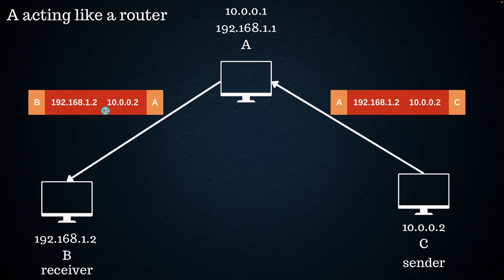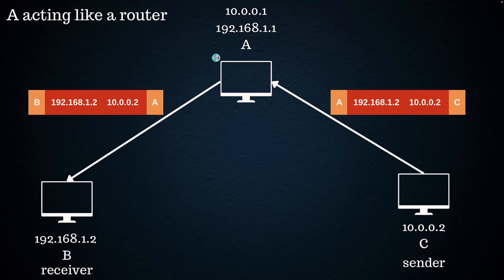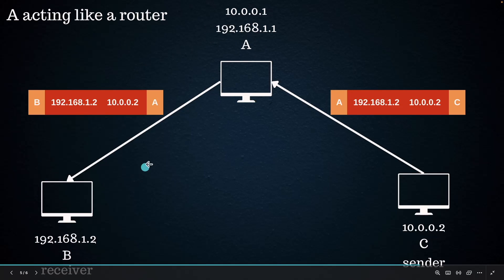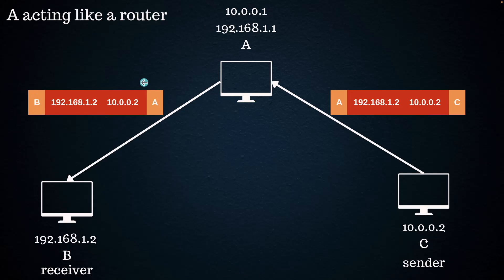The router also has a choice to change the source IP — that's called NATting, which I won't go into right now. But in this case we kept the source IP as is, and changed the source MAC address so the return path works. Then it does another ARP on the other side, finds the actual MAC address of the destination since they're on the same network, and forwards the packet. The destination receives it — that's pretty cool. You can do this with any machine.